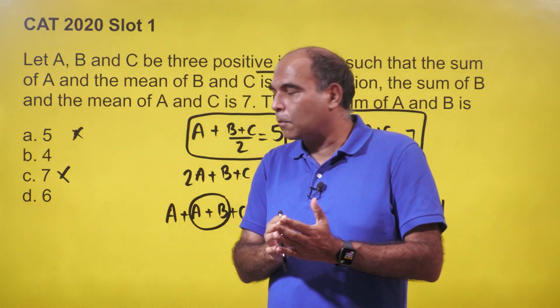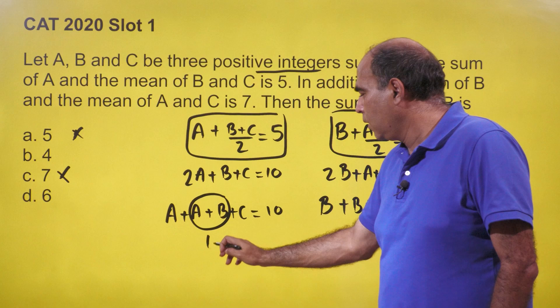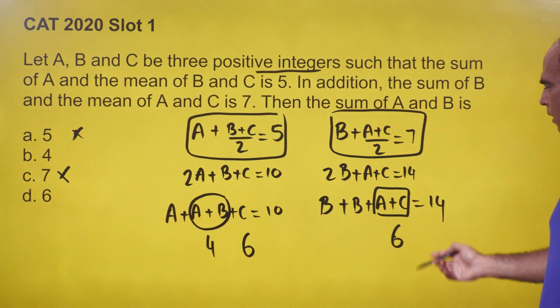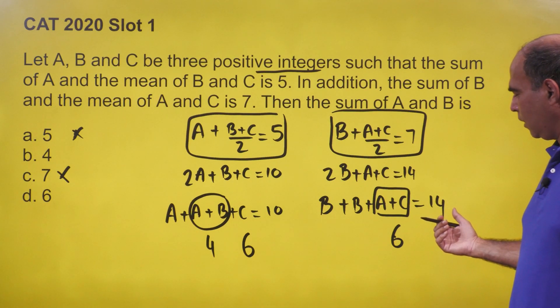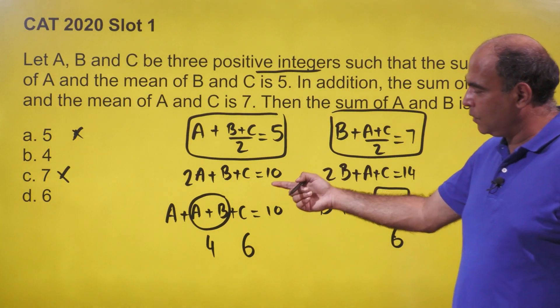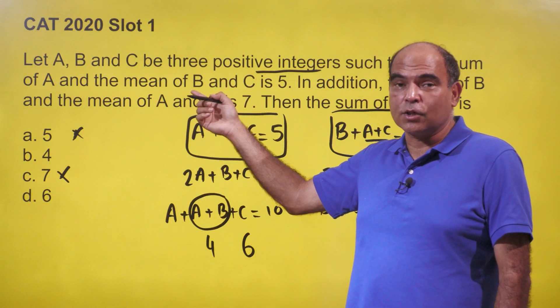We're down to two options: 4 or 6. Testing 4: if A + B = 4, then A + C = 6, which gives 2B = 8, so B = 4. But if A + B = 4 and B = 4, then A = 0, which is not possible since A must be a positive integer.